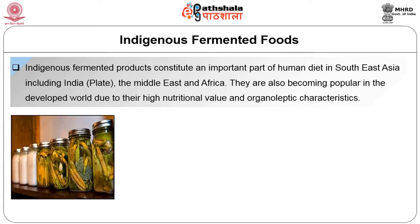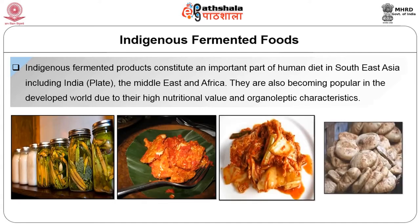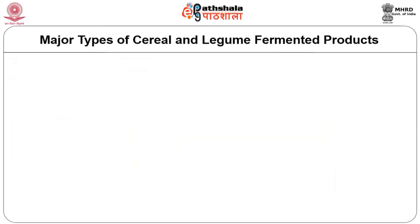They are also becoming popular in the developed world due to their high nutritional value and organoleptic characteristics. People of Asia are pioneers in the development of means of fermenting vegetable proteins to produce meat-like flavors. Indonesians developed fermented methods for introducing meat-like texture into vegetable products. Koreans are credited for the production of acid fermented vegetables. People of Egypt developed wheat breads leavened with yeast, while Indians discovered methods for souring and leavening cereal-legume batters.